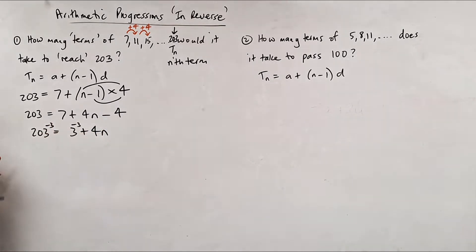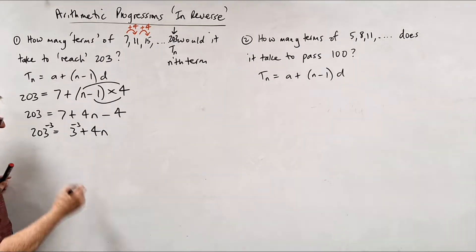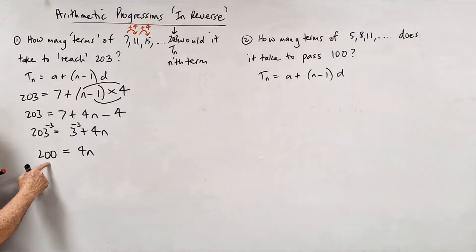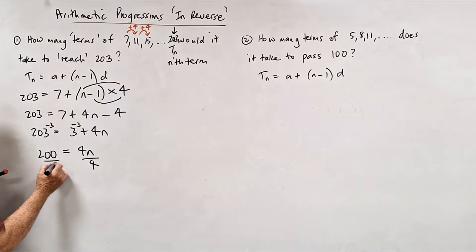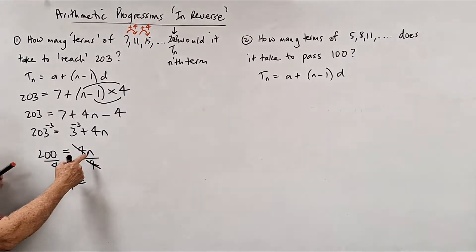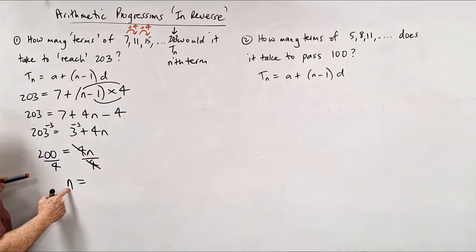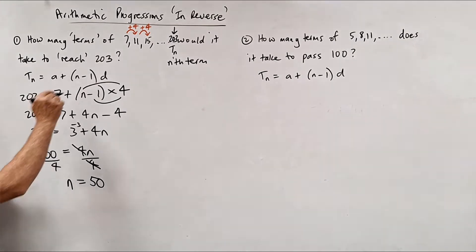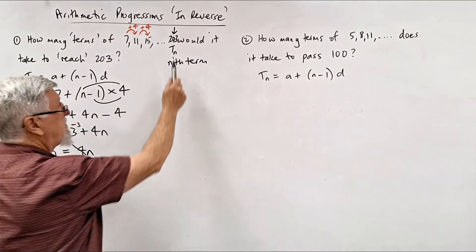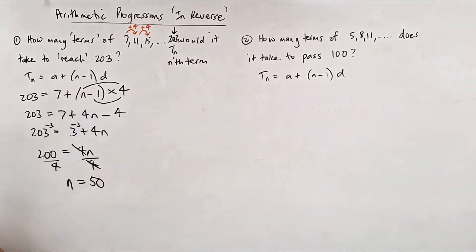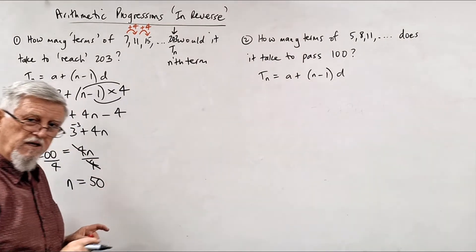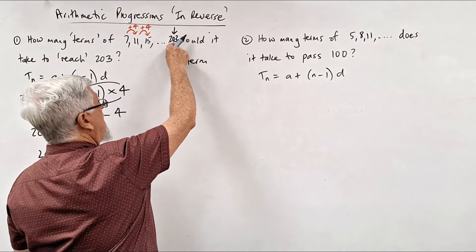A lot of you could do that in your head, but let's take our time. Subtract 3 from both sides: 200 = 4n. Now divide by 4 — not by 200 — the 4s cancel, and we write the variable first: n = 50. So when we get to the 50th term, we'll have 203.